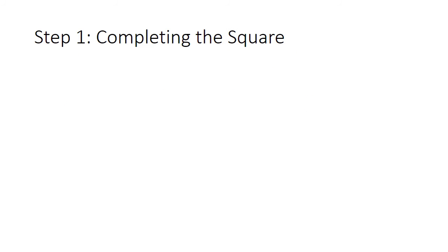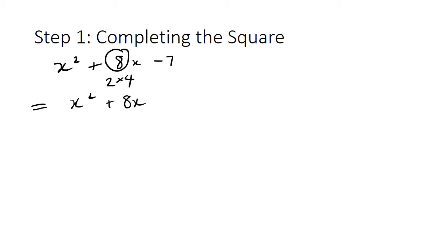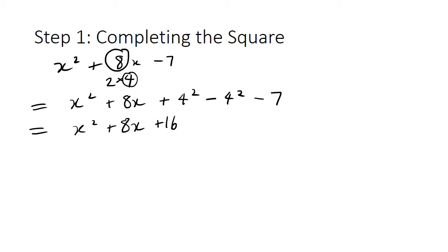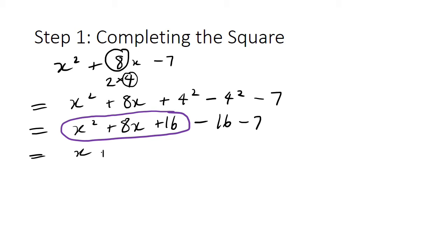Looking at an example, we'll start with the first step of completing the square. Imagine we start with a quadratic of the form x² plus 8x minus 7. The 8 is 2 times 4, so to complete the square we add 4², and to keep the equation in balance we subtract 4² and then subtract 7. Simplifying, we get x² plus 8x plus 16 minus 16 minus 7, and the first three terms form a perfect square, giving us (x+4)².